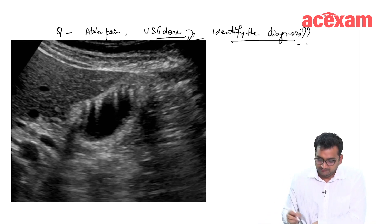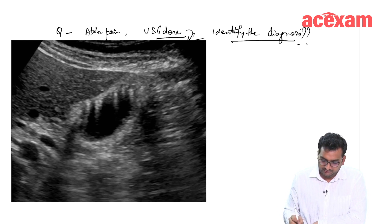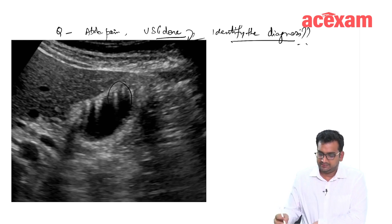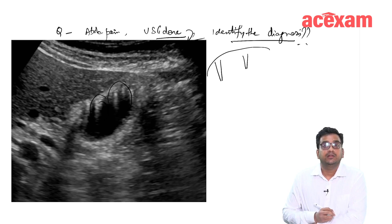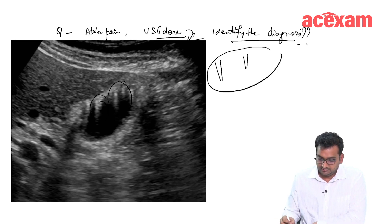What we can see here are these kinds of artifacts. These kinds of artifacts are visible in the gallbladder wall. The diagnosis is adenomyomatosis.